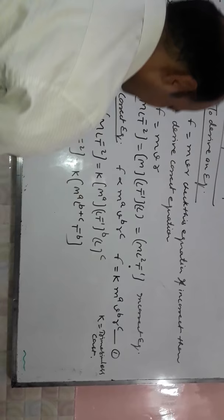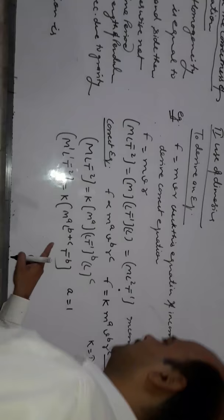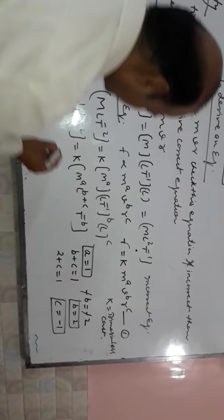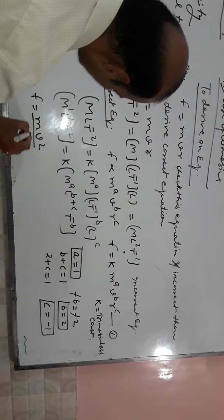From this equation, after comparing the powers: A equal to 1, B plus C equal to 1, and minus B equal to minus 2, so B equal to 2. Therefore 2 plus C equal to 1, so C equal to minus 1. Putting the values of A, B, C in equation 1: F equal to MV² over R. This is the correct equation.